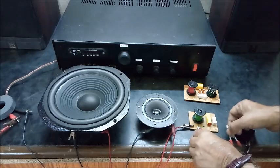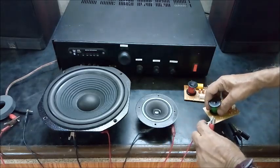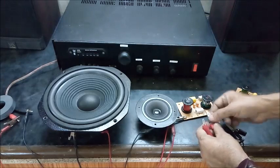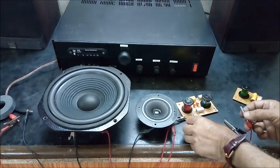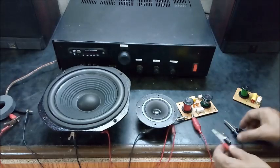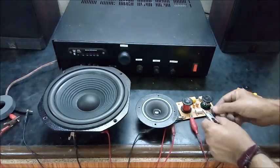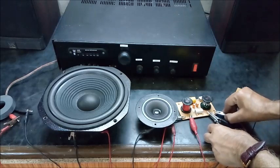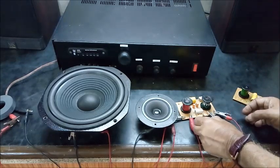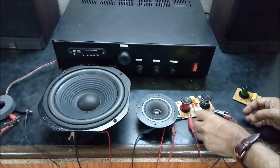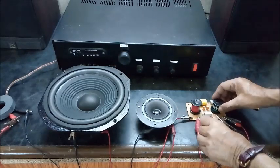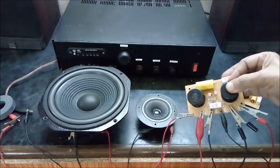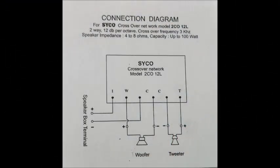Now the connection wires are taken out from the 6 dB network and connected with the 12 dB network. This is the connection diagram of the 12 dB network.